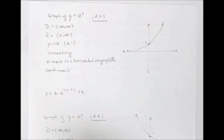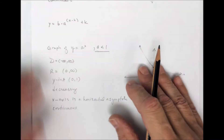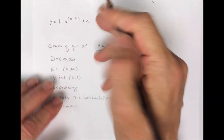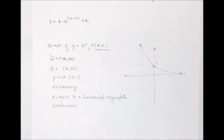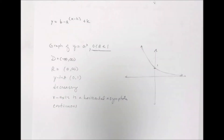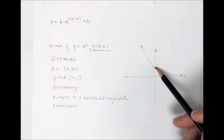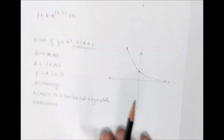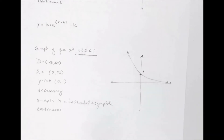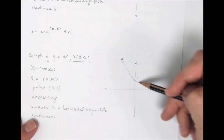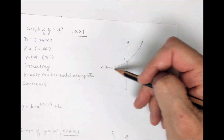Now, if a is less than 1 but still greater than 0 — because it can't equal 0 and it can't be a negative number — then it does the reverse: it goes downward from left to right, meaning it's decreasing. It still has the same y-intercept of (0, 1), and the domain and range are the same. It's continuous and has a horizontal asymptote at the x-axis.